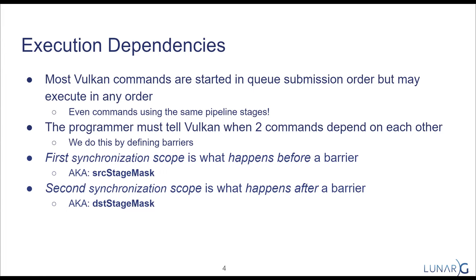When we tell Vulkan how to sequence commands, we talk about scopes. In terms of the order of operations, these are referred to as the first synchronization scope and the second synchronization scope. The first synchronization scope is what we will wait for, and the second synchronization scope is what waits for that first scope. You may hear me call these the source scope and the destination scope, because within the API those terms are almost uniformly used.